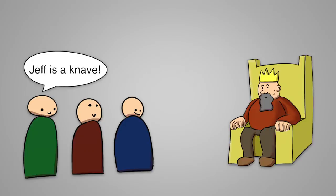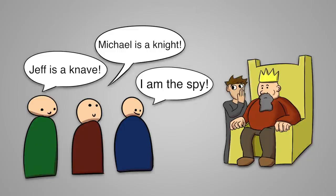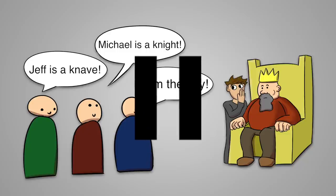Michael says Jeff is a knave. Julian says Michael is a knight. And Jeff says I am the spy. Can you satisfy your king and tell him who the spy is? Pause here for more thinking time.